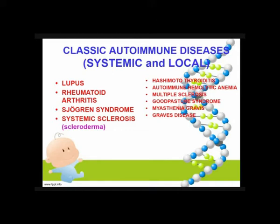For local immune diseases, we have your Hashimoto thyroiditis, your autoimmune hemolytic anemia, multiple sclerosis, Goodpasture syndrome, myasthenia gravis, and then your Graves' disease. Although there are still a lot of autoimmune diseases, these are just some of the most common that we will be discussing in radiologic pathology.